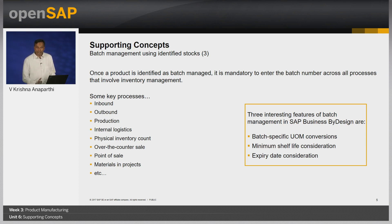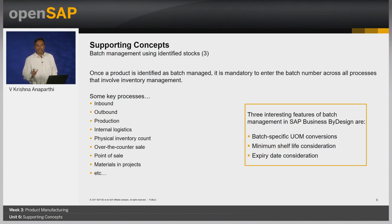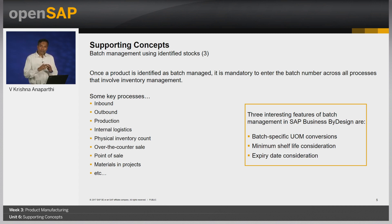The first is batch-specific UOM conversions. At times, it is required to maintain the UOM conversion at batch level. This is a very common requirement in the oil and gas industry where the conversion between mass and volume units varies from batch to batch. Also at a batch level, the user can maintain the expiry date to ensure that the batch beyond the expiration date is not used by the system in execution. The user can also maintain the minimum shelf life for a material at a site level. There is also an automated run called the identified stock maintenance run, which can be scheduled regularly to ensure that stocks beyond the expiry date or having a life less than the minimum shelf life will be set to restricted upon execution.